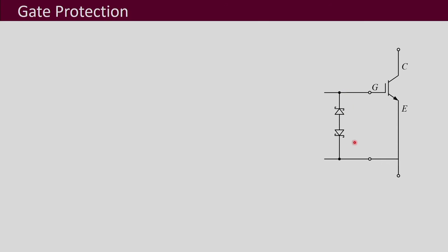One of the protections used is by connecting zener diodes — two back-to-back zener diodes. You choose the proper voltage of the zener diodes, and they will clip off any spikes that may reach the gate-emitter region.